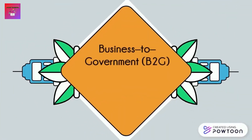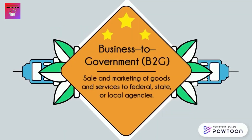Business to government transaction is also called B2G. B2G is the sale and marketing of goods and services to federal, state or local agencies. The examples of B2G transaction are businesses paying taxes, selling goods to government agencies, and etc.